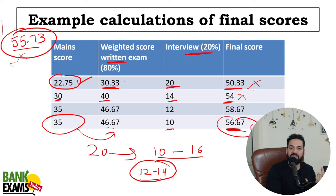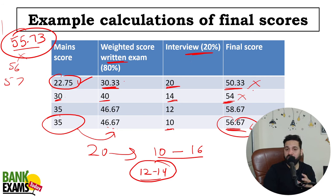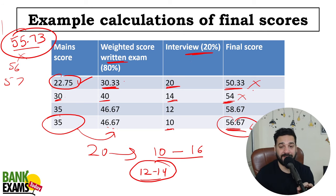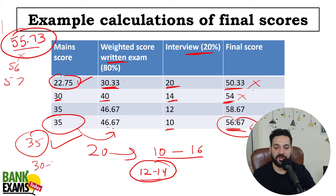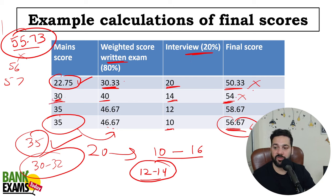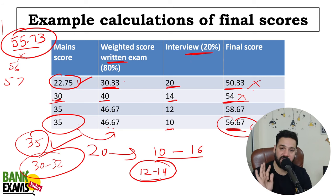So final cut-off is 55.73 — it can be 56 or 57 this year, so it all depends. If your score is 22, 23, 24, 27, 28, it is actually difficult, not impossible, but difficult. So how can you crack it? You need to score at least around 35 marks — although if you are able to score 30 or 32, it is possible but difficult. Maine aapko dikhaya: agar aap 30 marks lete ho toh 54 nahi ho paata. 33, 34 — then achievable. So I am being very realistic and very transparent.